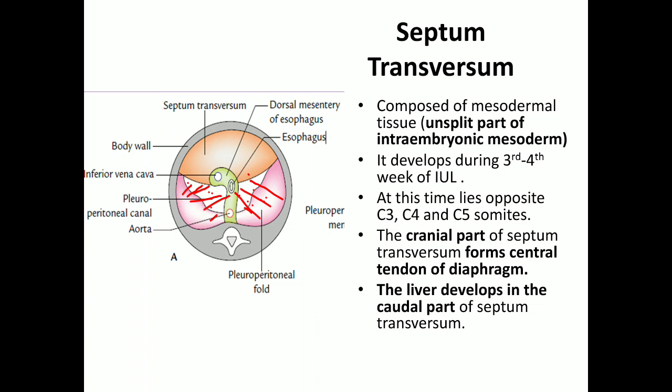If this gap is not filled — that is, if there is a defect in fusion of the pleuroperitoneal membrane with the septum transversum or dorsal mesentery of the esophagus — it leads to formation of a foramen or defect in the diaphragm called the foramen of Bochdalek, resulting in a congenital diaphragmatic hernia. The pleuroperitoneal canal is larger on the left side and obliterates later on the left compared to the right. Therefore, congenital diaphragmatic hernia (Bochdalek hernia) is more common on the left side.